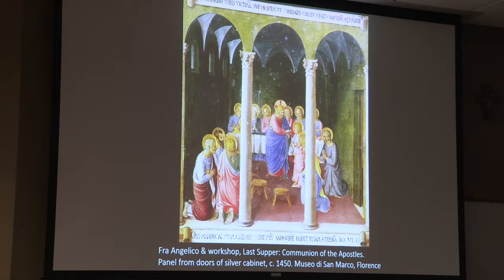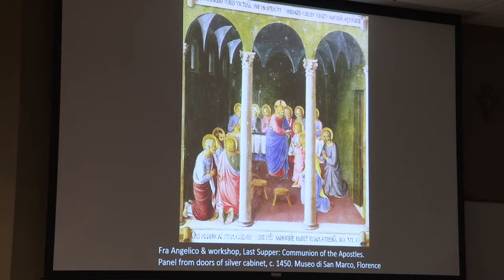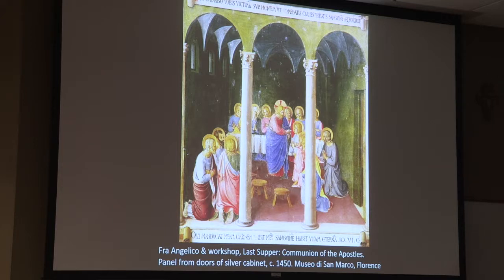Fra Angelico makes the figure of Christ administering communion to the apostles the center of the painting, with two prominent columns in the foreground. By showing the apostles kneeling to receive and Christ bending forward to administer the bread, he evokes the idea of the shepherd feeding his flock in a tender kind of way.